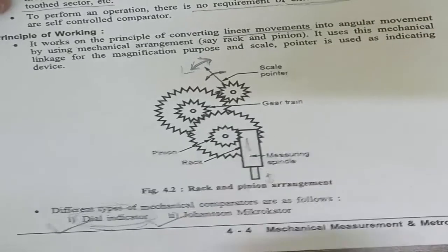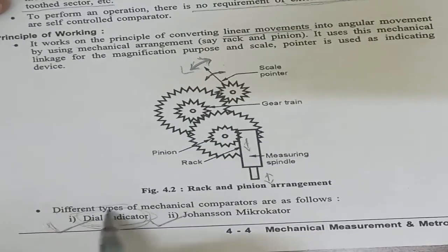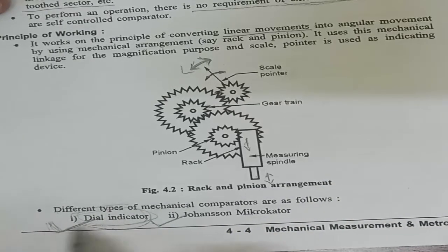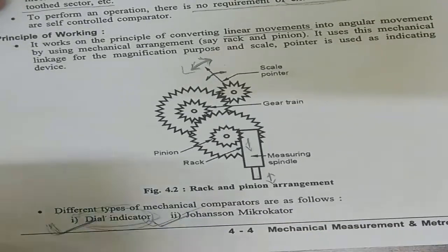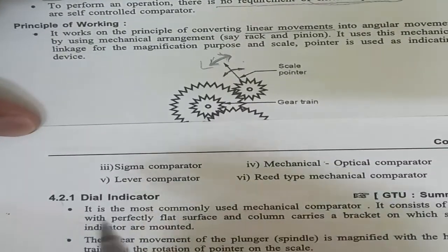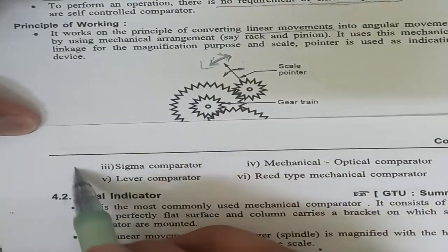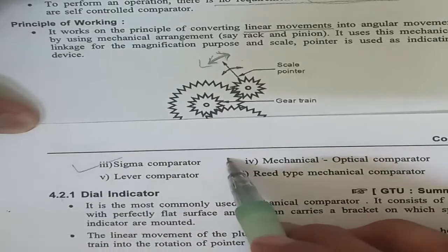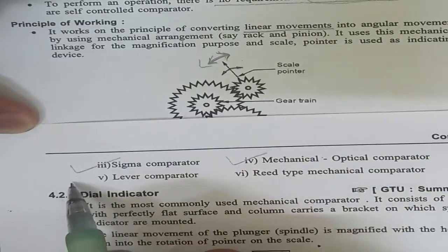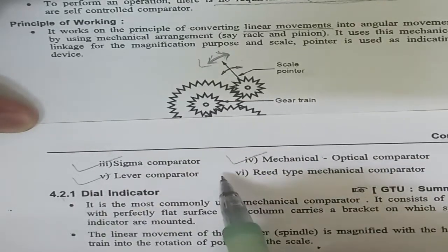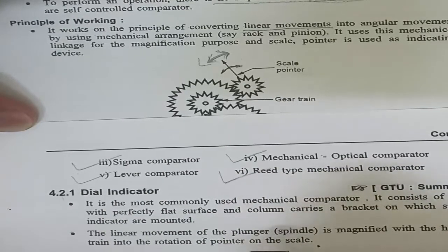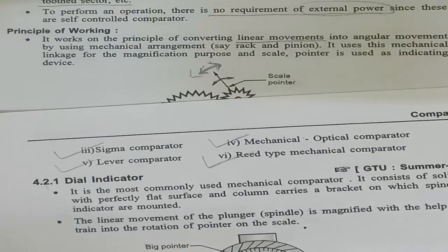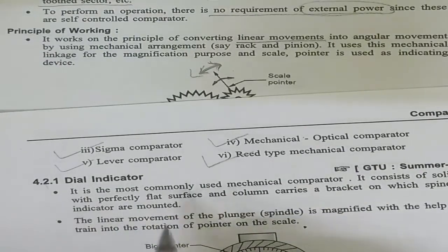Different types of mechanical comparators include: dial indicator, Johansson Mikrokator, Sigma comparator, mechanical-optical comparator, lever comparator, and reed-type mechanical comparator. In this video, we are going to focus on the dial indicator.